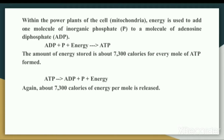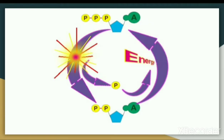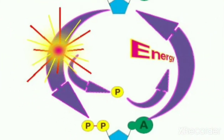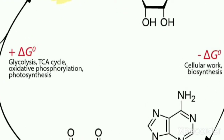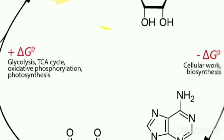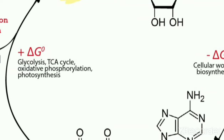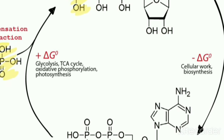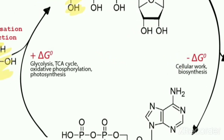The energy-carrying part of the ATP molecule is the triphosphate tail. You can see in this figure the structure of the ATP molecule. Three phosphate groups are joined by covalent bonds — these phosphate molecules are joined to one another by covalent bonds, which are the strongest bonds. The electrons in these bonds carry energy.